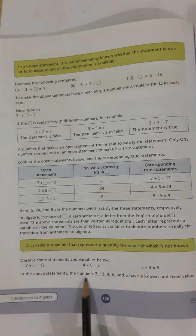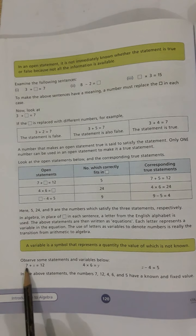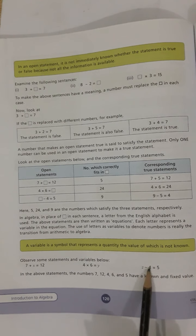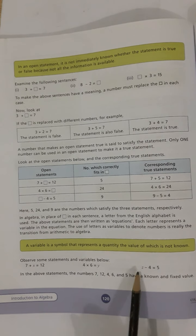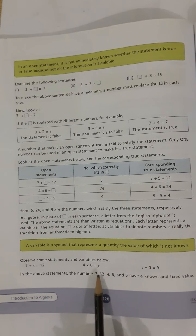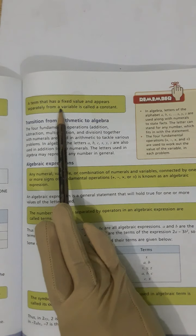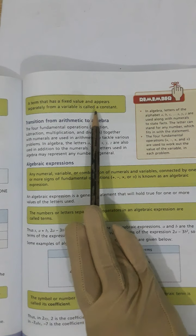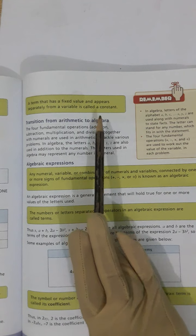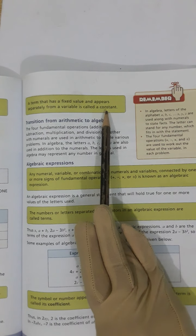In the above statement, the numbers 7, 12, 4, 6, and 5 have a fixed value — these are called constants. A term that has a fixed value and appears separately from a variable is called a constant. Like in our example, the fixed-value numbers appearing apart from the variable are all constants.